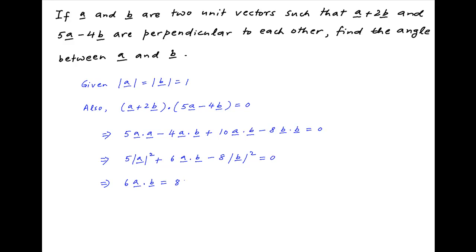This can be rearranged as 6 times a dot b is equal to 8 times the square of the absolute value of vector b, minus 5 times the square of the absolute value of vector a, which is equal to 8 minus 5, which equals 3. Therefore, a dot b is equal to one half.